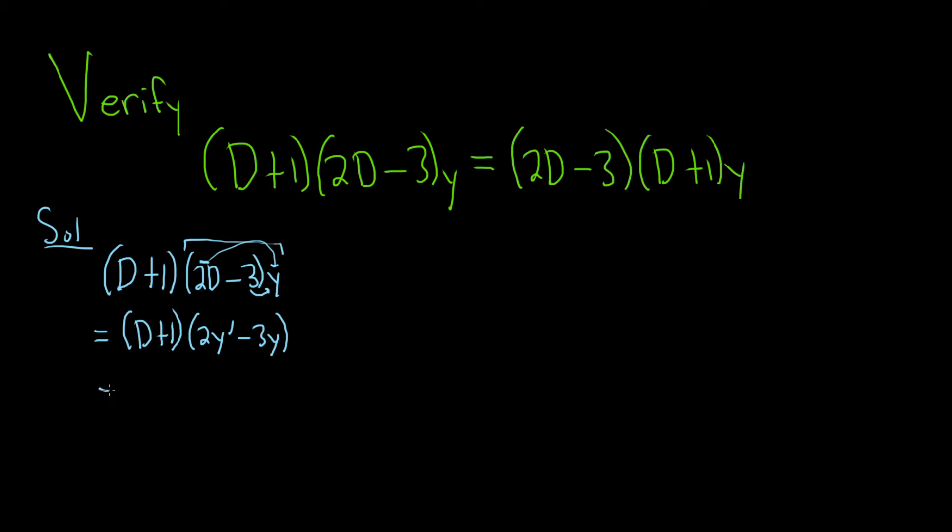For this next step, I like to do it one piece at a time. We take big D and apply it to both of these. When you take big D and apply it to this one, you get 2 times the second derivative because you're taking the derivative again. Then apply big D to this one and you get minus 3 times the first derivative.